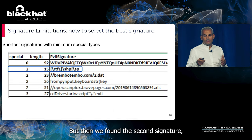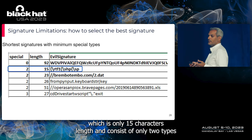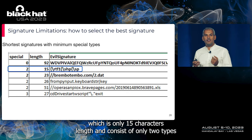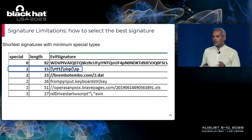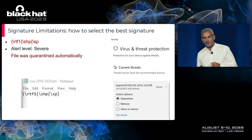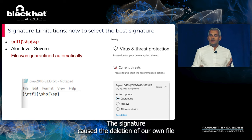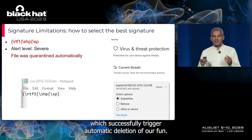Then we found a second signature: only 15 characters in length, consisting of only two types of non-alphanumeric characters — a slash and curly brackets. We manually added it to an empty file, and it worked. This signature caused the deletion of our own file — the first time we managed to find a minimal signature that successfully triggered automatic deletion.